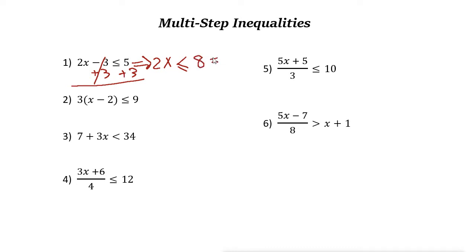The next step is easy, just similar to equations. 2x is less than or equal to 8. Divide both sides by 2, then x is less than or equal to 4.